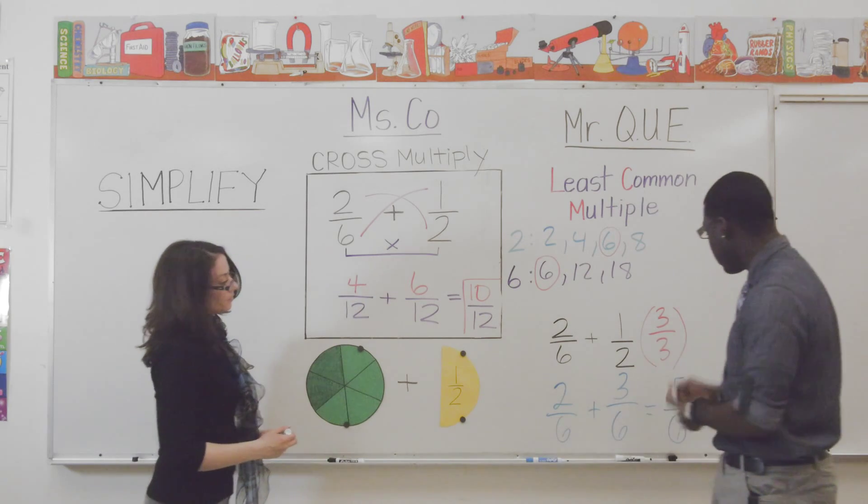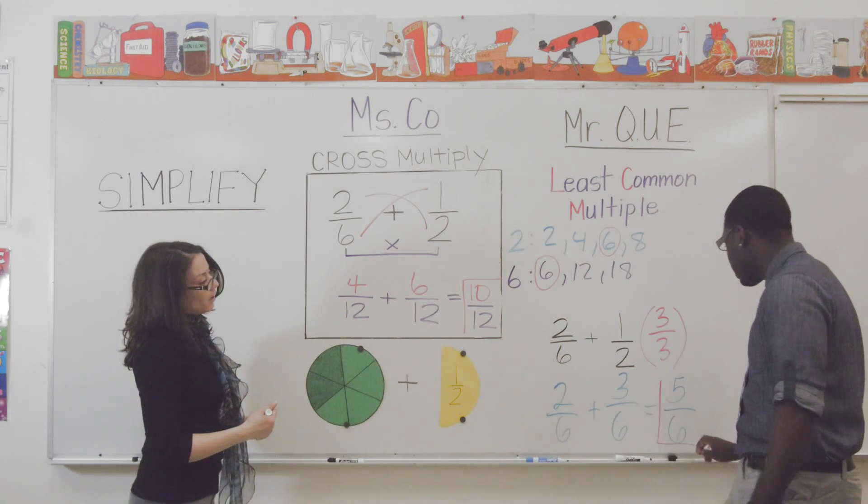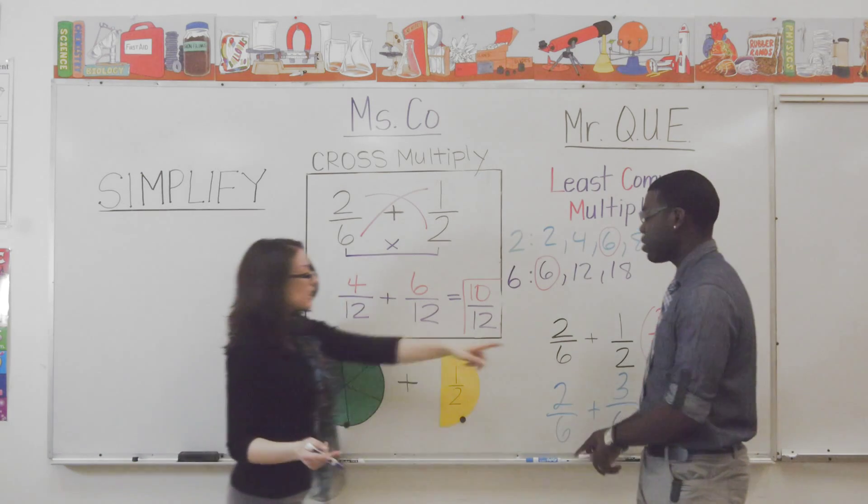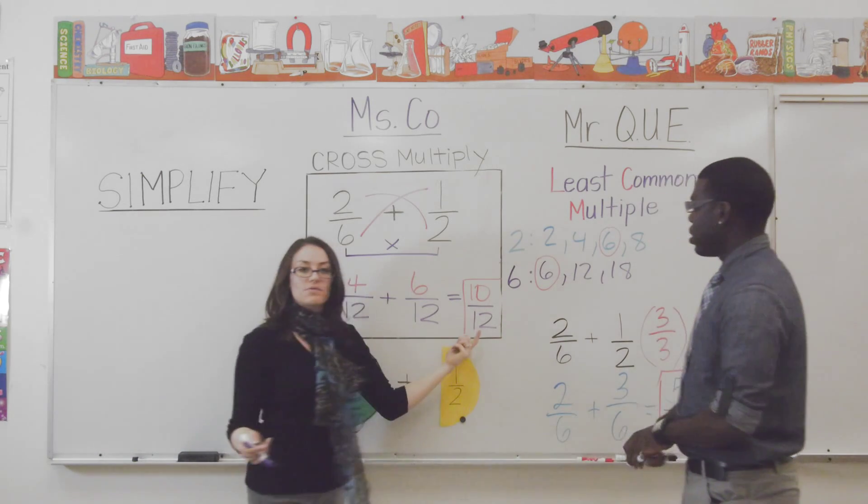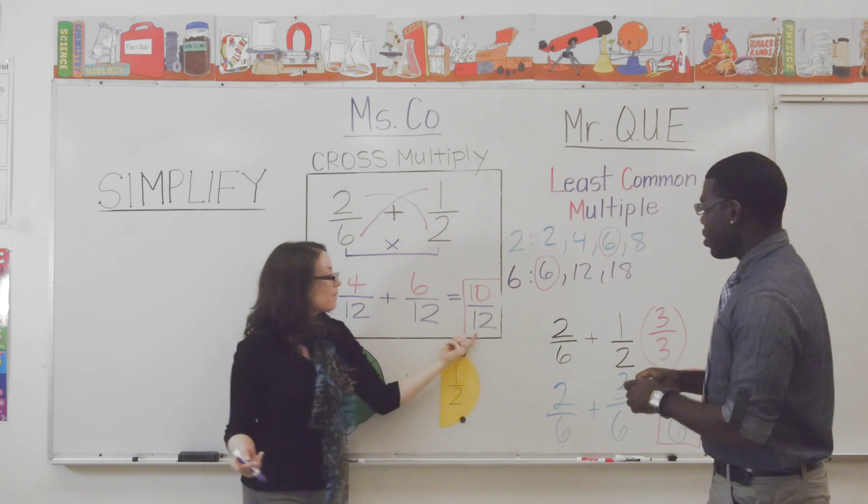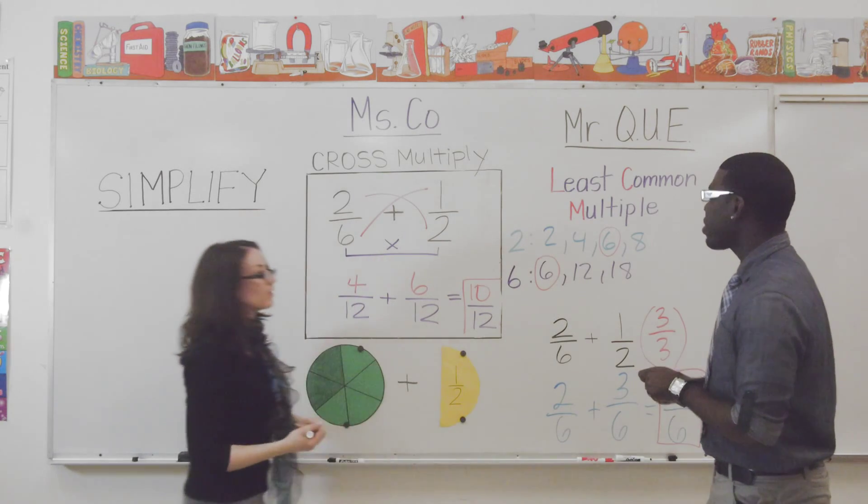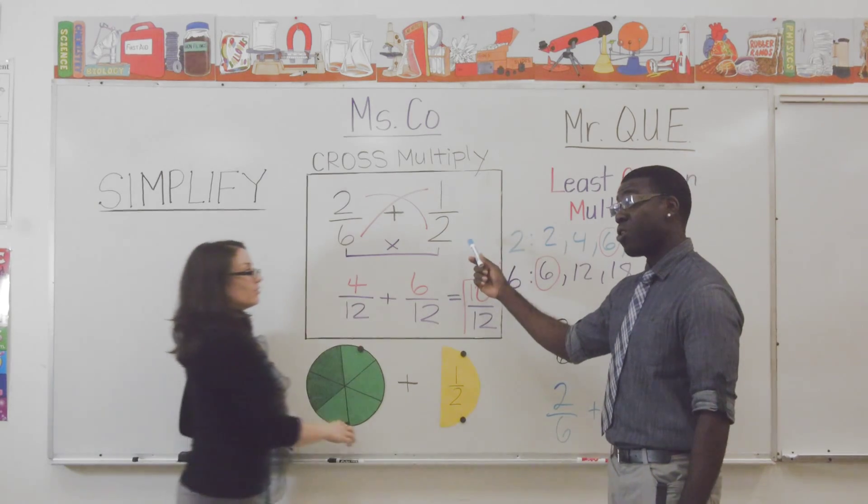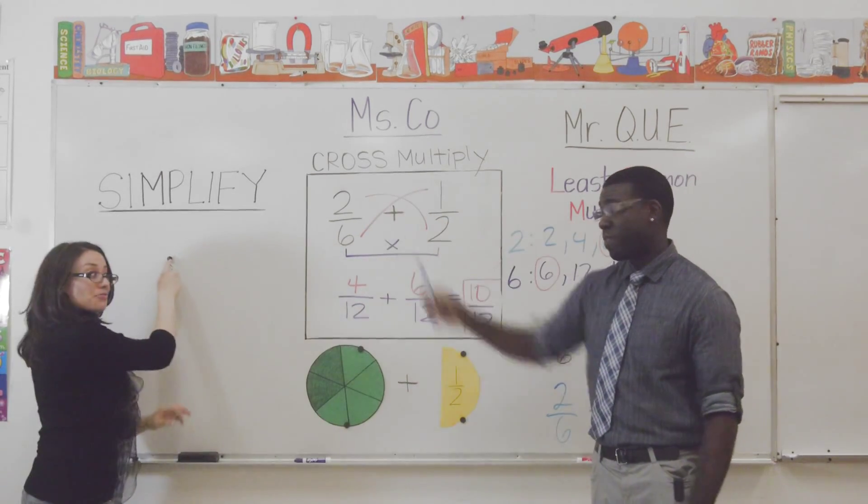Okay, but wait a minute, Q. Yes. You got five-sixths, and I got ten-twelfths. Okay. Why did that happen? Are these the same or are they different? Well, they are the same, but you cross-multiply, so you need to simplify. Simplify. Exactly.